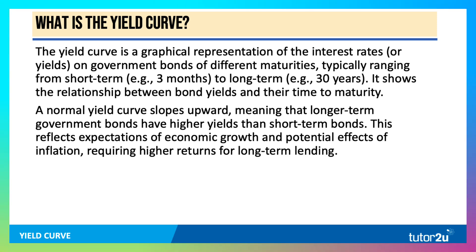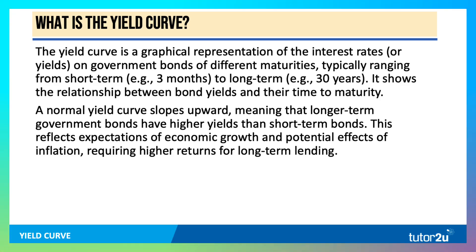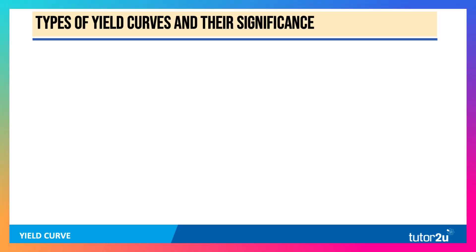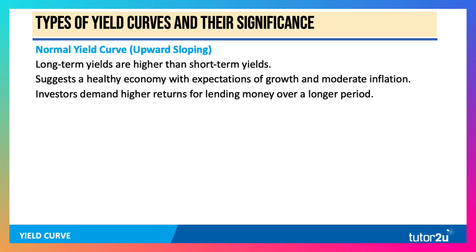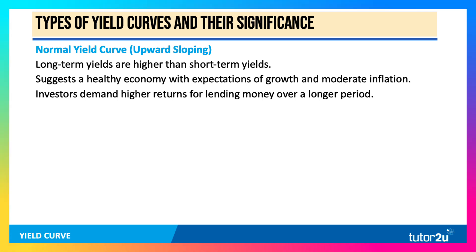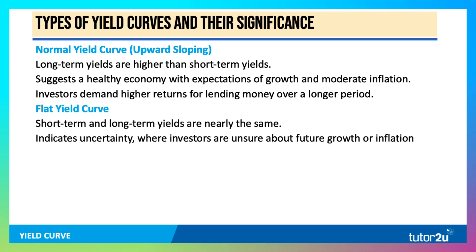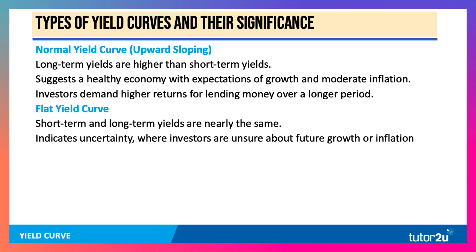It reflects expectations of growth, and also, crucially, the potential effects of inflation. So if you're going to lend the government money for 5, 10, 15, 20 years, you've got to factor in what you think inflation will be over that period. In economics, we talk about different types of yield curves. Normally, the yield curve slopes upwards — long-term yields are higher than short-term yields — and that typically suggests a robust economy expected to grow with perhaps moderate to low inflation. Investors are simply asking for higher returns for lending their money over a longer period.